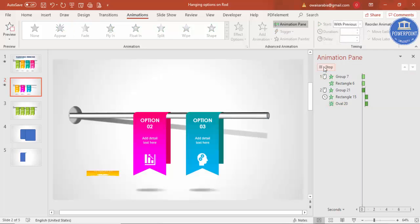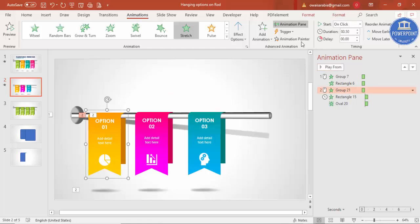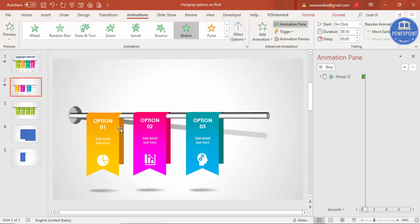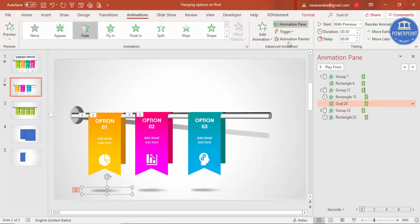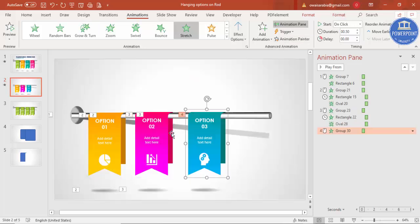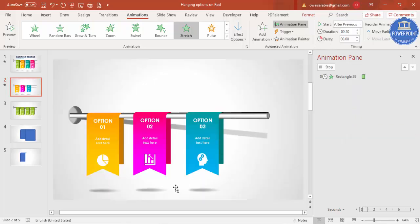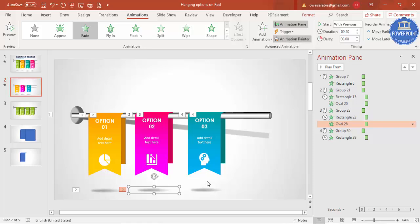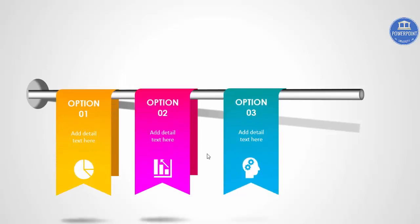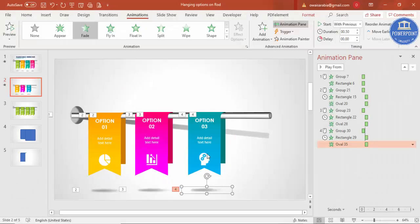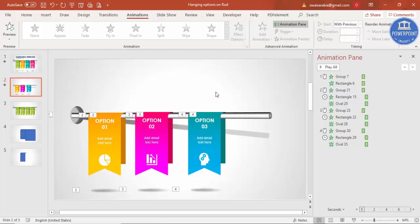If you play it, you can see the animation working. To apply the same animations to the other options, select the first option's elements, use the Animation Painter, and click on each subsequent option's elements. When you play the full sequence — click: the rod comes out from the hole, click: the first option appears, then the second, then the third. It's very easy to make this kind of infographic in PowerPoint.